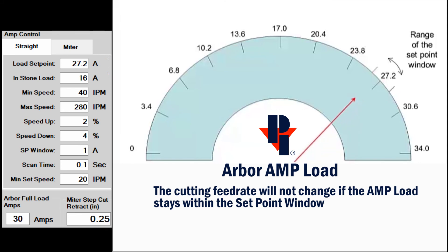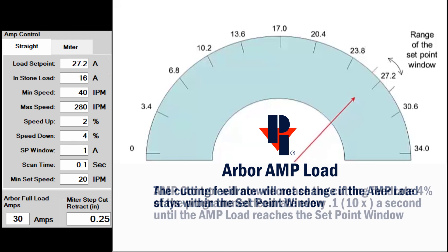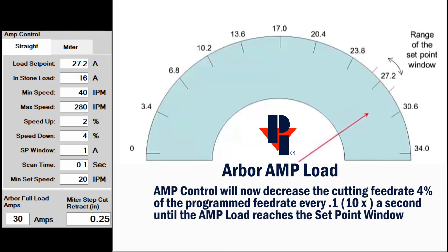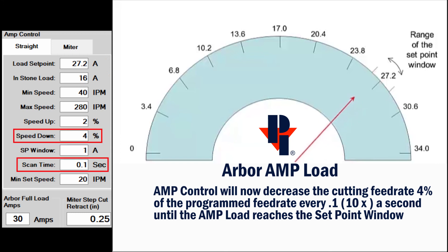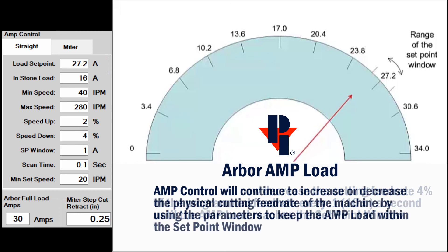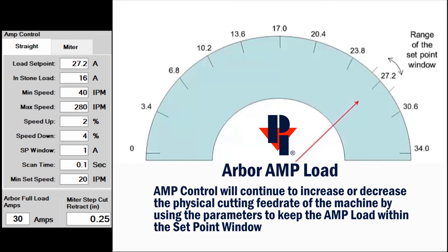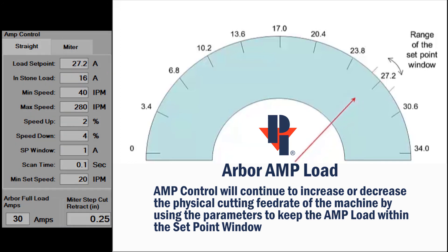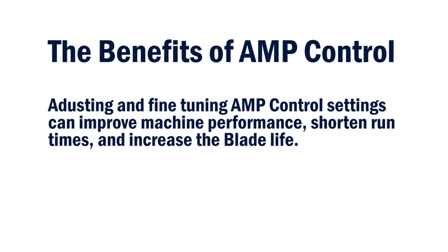The cutting feed rate will not change as long as the Amp load stays within the window. When the blade is cutting harder material, the Amp load will increase, which in turn will decrease the cutting feed rate of the machine. Increasing and decreasing the feed rate to maintain a consistent Amp load will apply a more consistent pressure or force to our material, blade, and machine. Using Amp control can improve the machine's performance and increase the equipment's life.